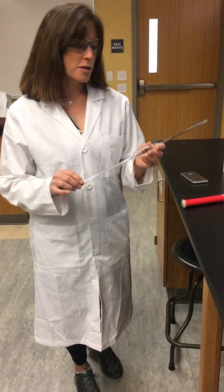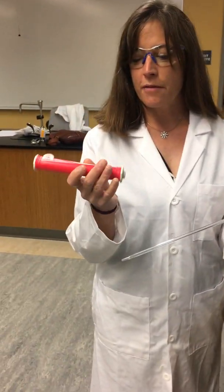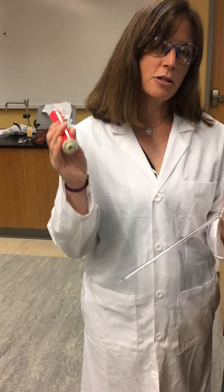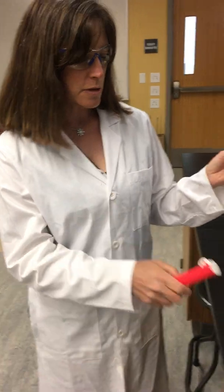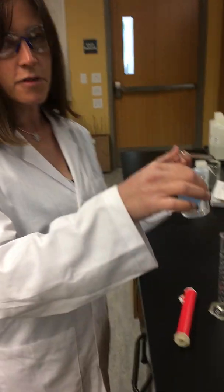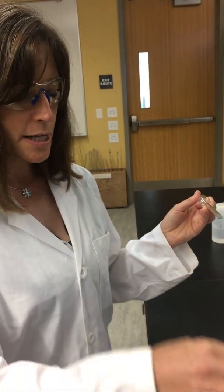So when using a volumetric pipette, you need an apparatus. We have what's called a pipette aid. We can use pipette bulbs, but they do the same thing. We already have our volume of liquid, which in this case is water, poured in a beaker.